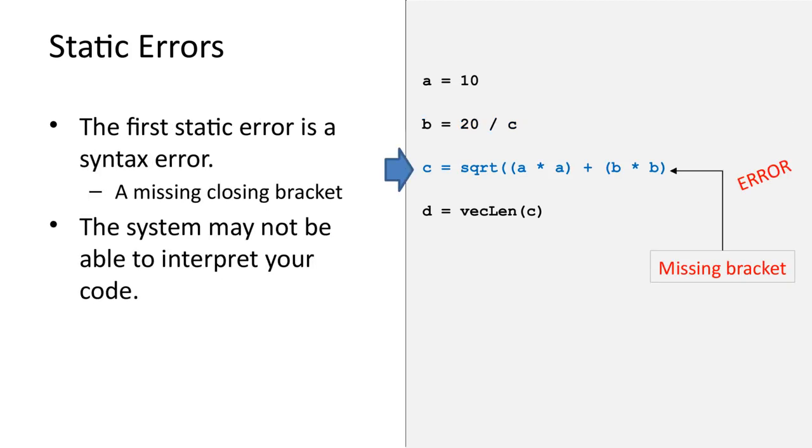The second error is the syntax error. It is due to the missing closing bracket in the third line of code. With such syntax errors, the system may not even be able to interpret your code. So the system may require the error to be fixed before it can do anything else.